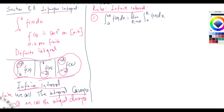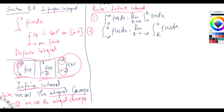Rule number two: if you have the integral from negative infinity to b of f of x dx, you write it as the limit as r tends to negative infinity of the integral from r to b of f of x dx. The same technique applies — if one limit of integration is infinity, replace it with r and take the limit as r tends to that infinite value.